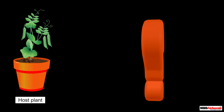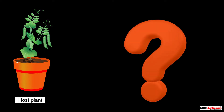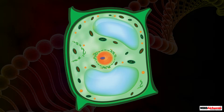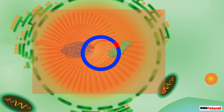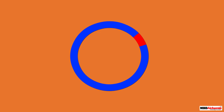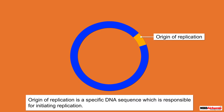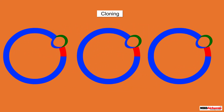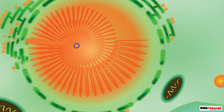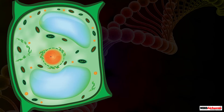You must be wondering what happens to the recombinant DNA introduced into the host organism. It cannot multiply itself until it becomes part of the genome of the host cell. For the multiplication of any alien piece of DNA in an organism, it must be part of the chromosomes, which contain a specific sequence known as the origin of replication. The origin of replication is a specific DNA sequence responsible for initiating replication, so the alien DNA is linked with it to integrate into the genome of the recipient.